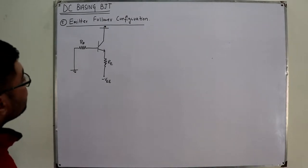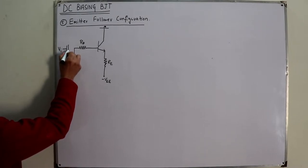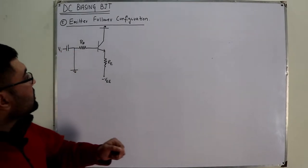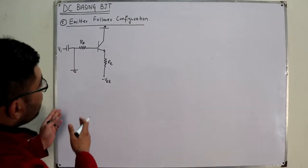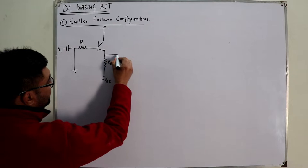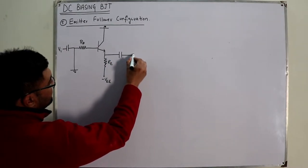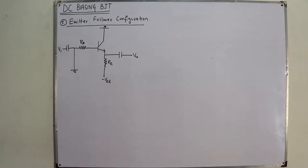You don't have a collector resistance here. We are considering an NPN transistor. The input signal is applied at the base — the same manner as before. But the output, instead of being taken at the collector, is taken at the emitter terminal. So that output capacitor is present here, giving you V output.